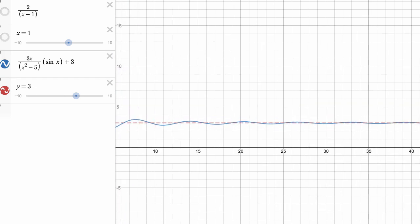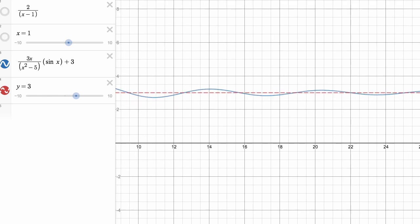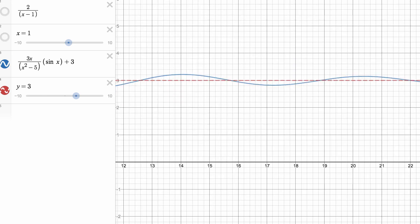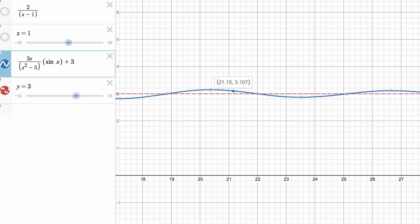We are now oscillating around the horizontal asymptote. And once again, this limit can exist. Even though we keep crossing the horizontal asymptote, we're getting closer and closer and closer to it, the larger x gets.